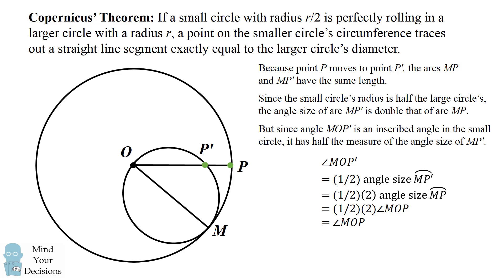Next, we have the arc MP' is equal to the angle MOP'. That's because MOP' is the central angle of the circle. And then we have the one half and the two cancel out. So we end up with the last equation that's equal to angle MOP'.